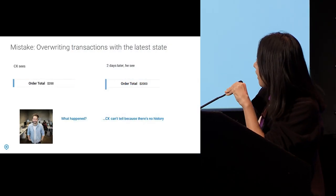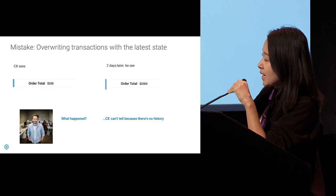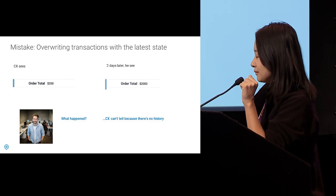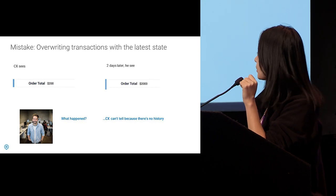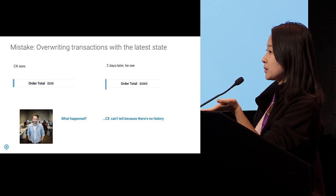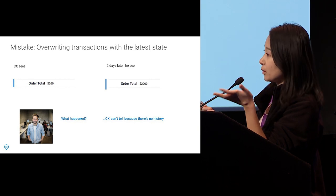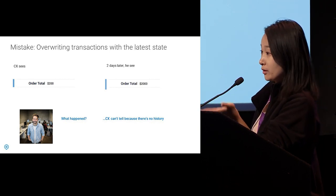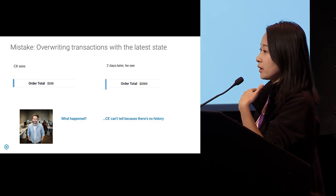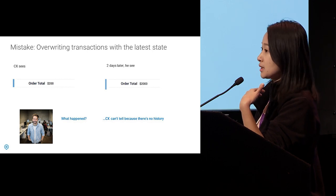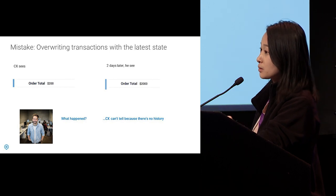The biggest mistake in our first iteration was that we were overriding transactions with the latest state. This meant users could not access the history of events over time — they could only see what the state is today. For example, customer support rep Chris sees an order total of $200 two days earlier, then $2,000 a couple of days later. It's completely unclear what happened — it could be a system bug or a user modification — but without that history, he can't say for sure.